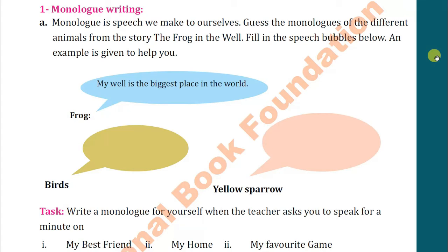The birds might be thinking that the frog does not understand the importance of flying and does not understand the beauties of nature. The yellow sparrow might be thinking that the bird outside the well is so beautiful and the frog does not know the importance of these beautiful things. In this way you can fill in the bubbles — just a short exercise of monologue writing.